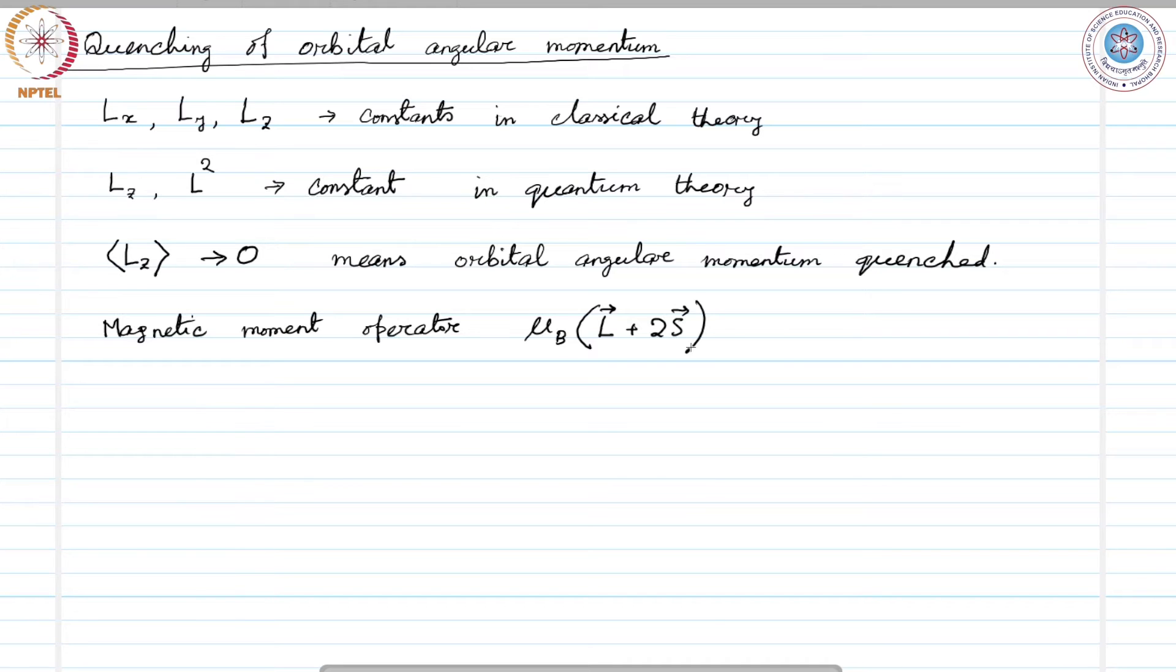As an example, we consider a single electron with orbital quantum number L equals 1. It is moving about a nucleus, the hole being placed in an inhomogeneous crystalline electric field, and we do not consider the electron spin in this case. So we have an inhomogeneous crystalline electric field.